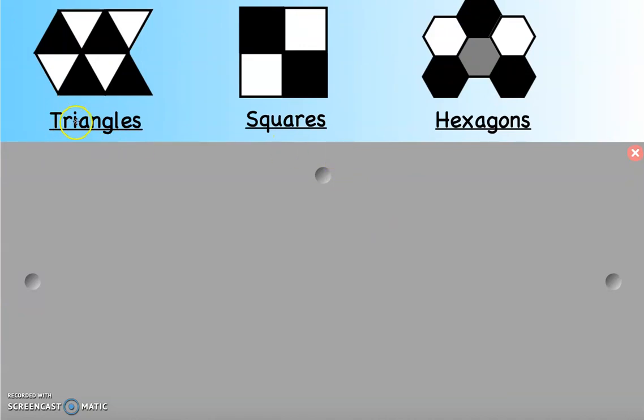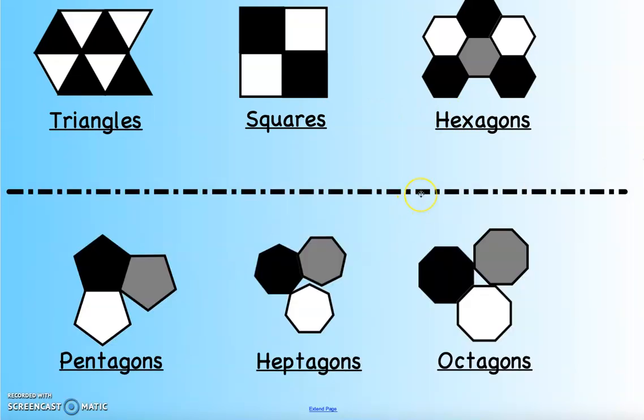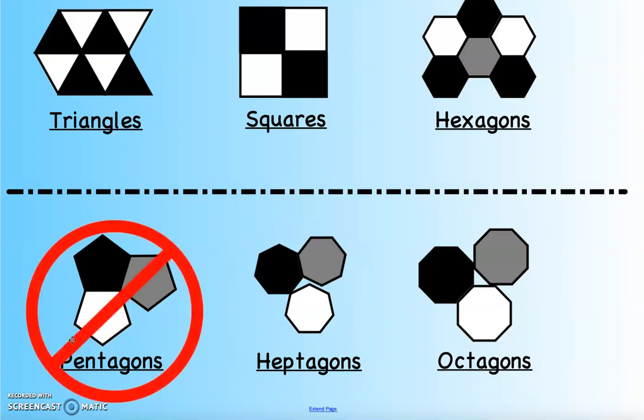What about a five-sided shape, like a pentagon? Well, let's take a look. Down here, I have pentagons. And you see, I've already put three regular pentagons together, and we have this gap right here. And so another pentagon would not fit in that gap. And so pentagons don't tessellate on their own.